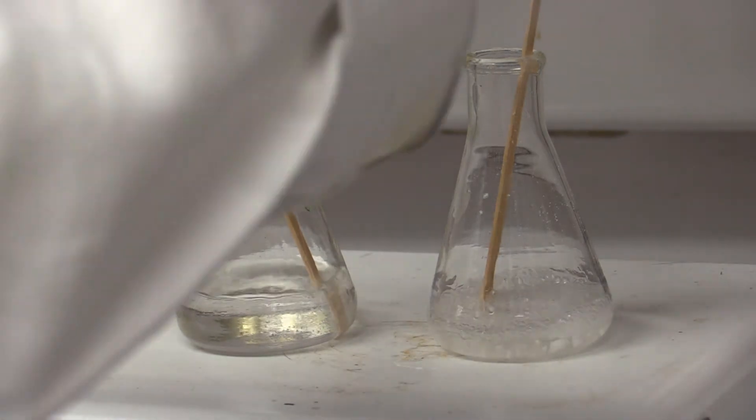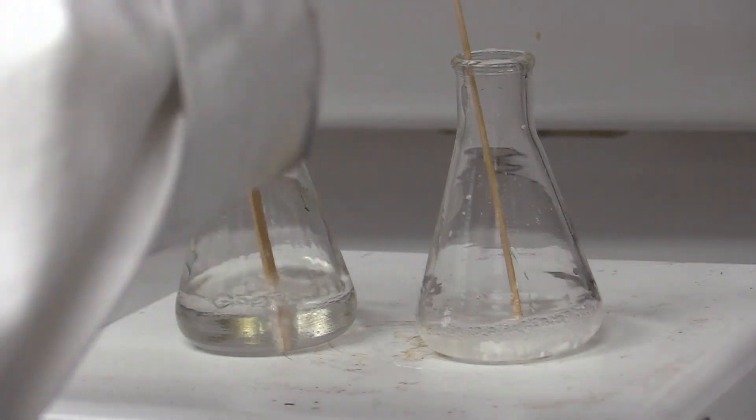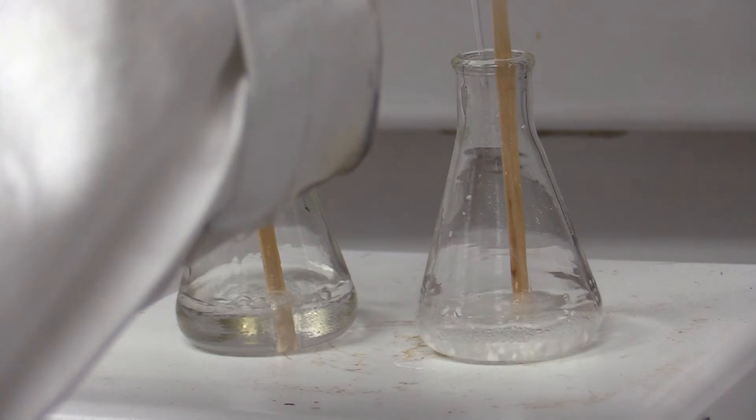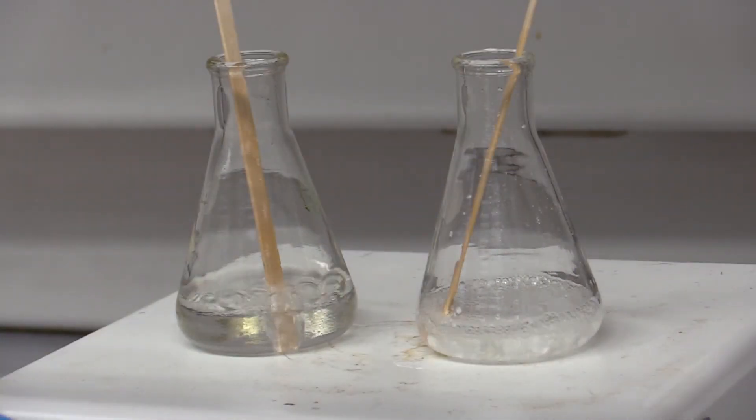When the solvent comes to a boil, slowly add the hot solvent to the cholesterol mixture. Be sure not to add too much. You want just enough to dissolve the solid. If you add too much, the amount of precipitate will be less, lowering your percent recovery.